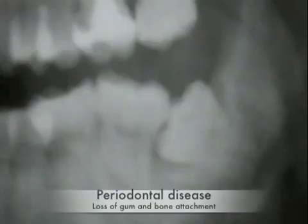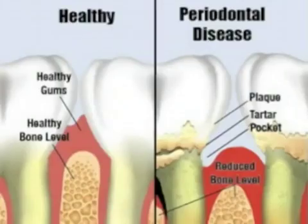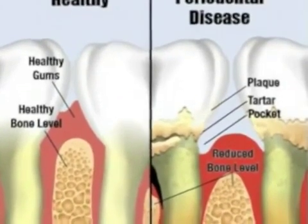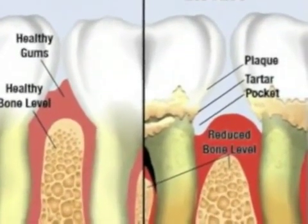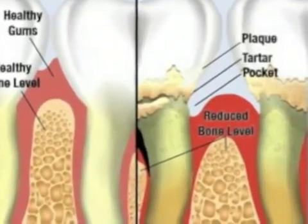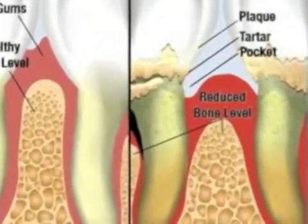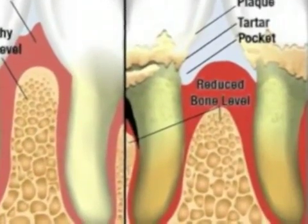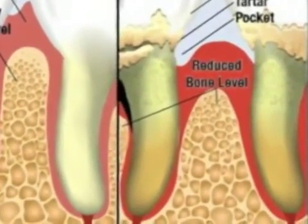Gum disease, also known as periodontal disease, occurs between the second molars and the wisdom teeth as a result. The wisdom tooth and the second molar share the same bone and gum tissue. And when the tissue is damaged, repair or regeneration is extremely difficult. This greatly compromises the health of the second molars, which are very important teeth for chewing.